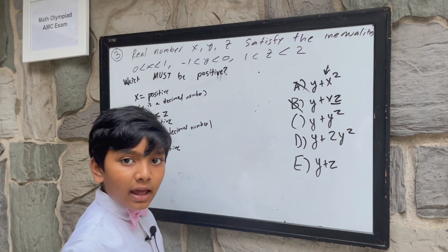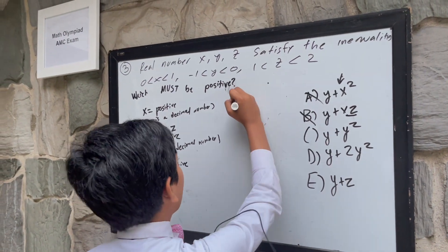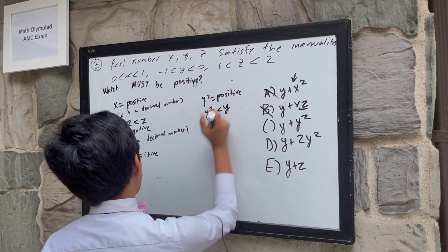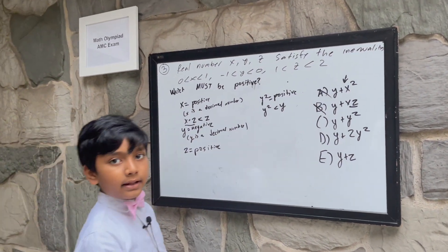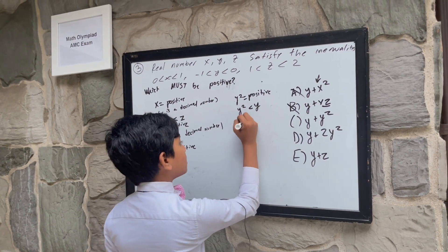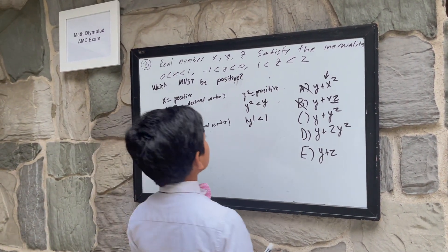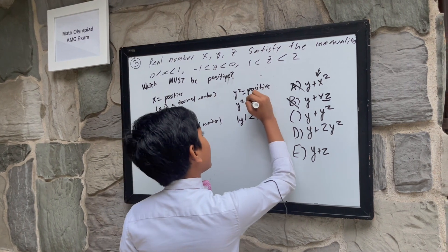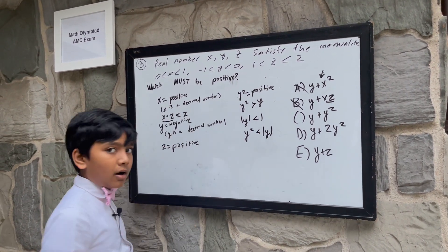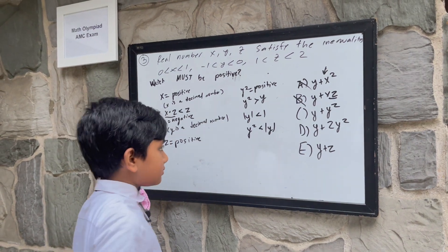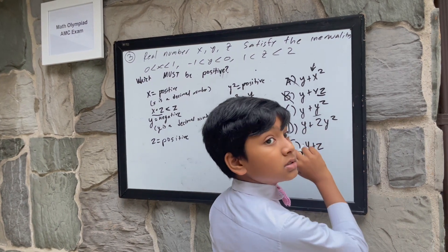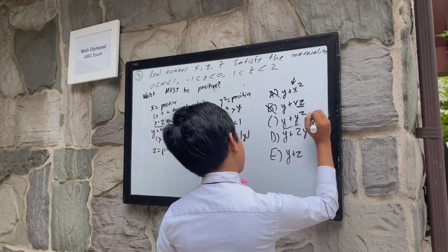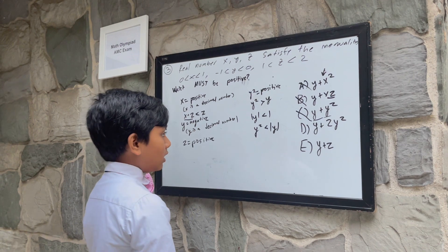y plus y squared. Now, even though y squared is positive, y squared will be less than y, as y is greater than negative 1. Or, in other terms, the absolute value of y is less than 1. So that means that y squared will always be greater than y technically, but less than the absolute value of y. So that means that if y squared is always less than the absolute value of y, this necessarily is negative. So that's the complete opposite of what the question is asking for.